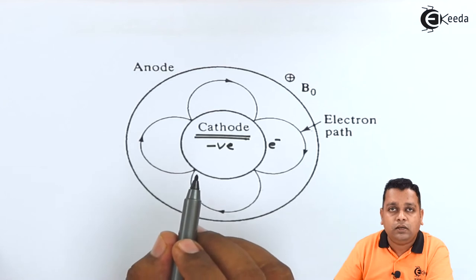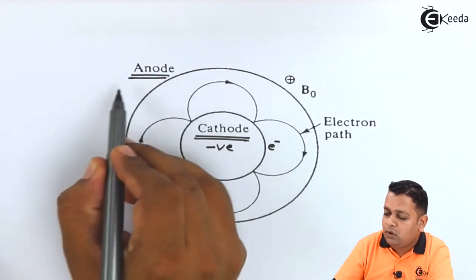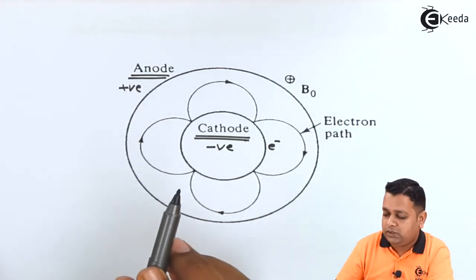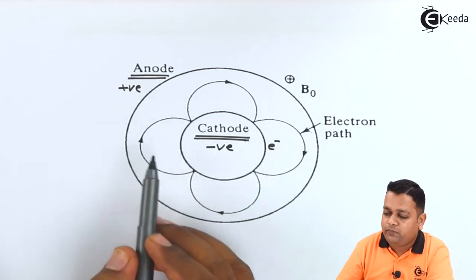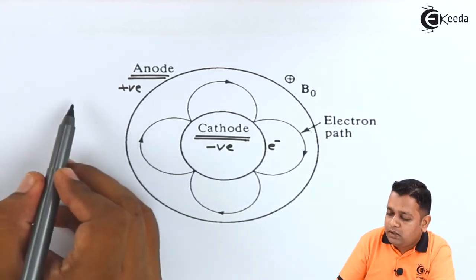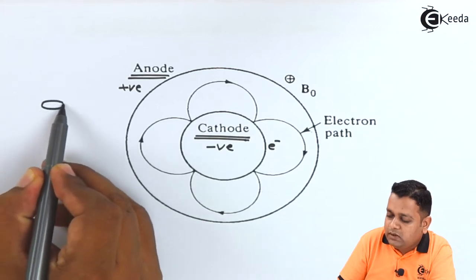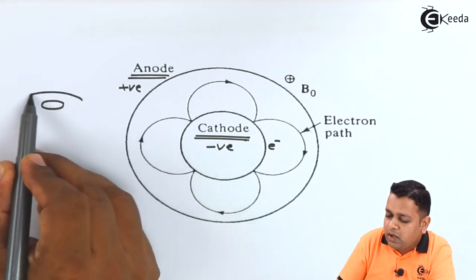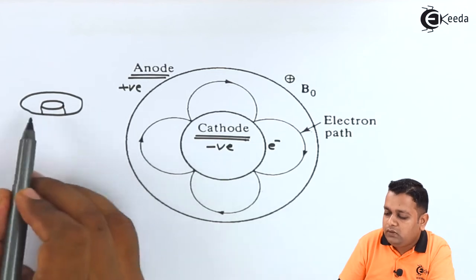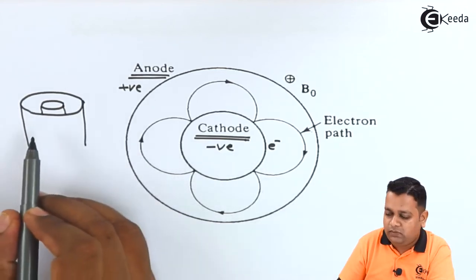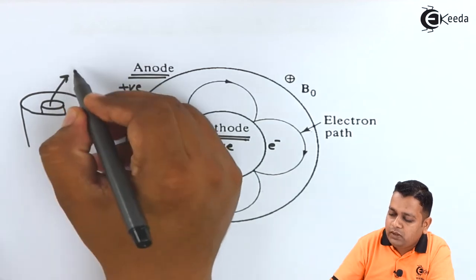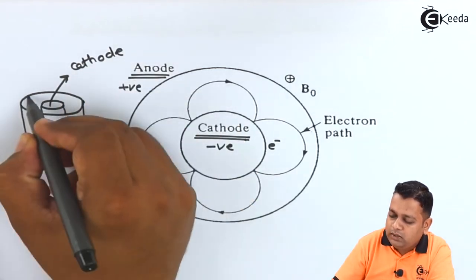There is another electrode called the anode, which is always given a positive polarity with the help of DC potential. In this cross-sectional diagram, the anode is again having a circular cross-section. In a three-dimensional view, there is a centrally placed cathode surrounded by the anode. The cathode is a solid-body cylinder, whereas the anode has some hollow space inside — one cylinder inside another cylinder.